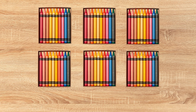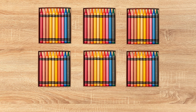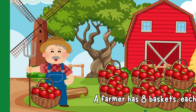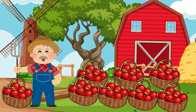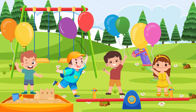Now it's your turn to try a few by yourself. Ready? There are six packs of crayons with ten crayons in each pack — that's six times ten equals sixty crayons. A farmer has eight baskets, each with nine apples — that's eight times nine equals seventy-two apples. There are four kids and each kid has two balloons — that's four times two equals eight balloons.